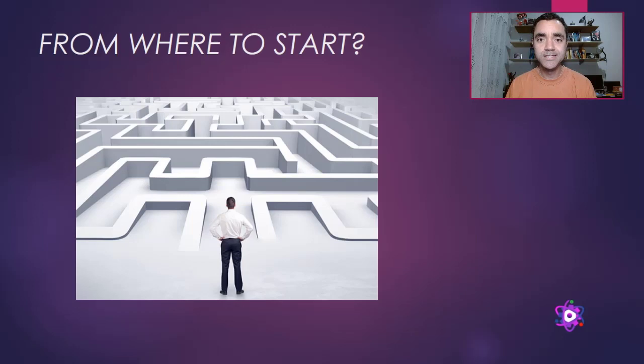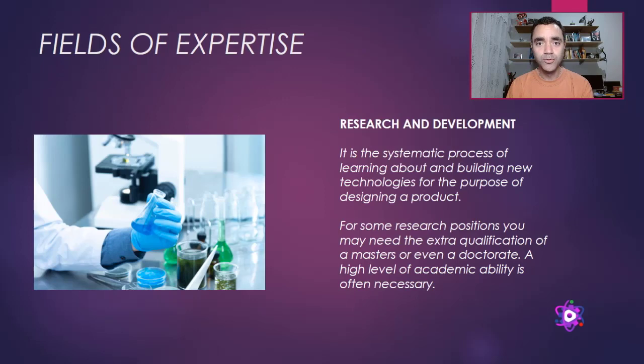To begin with, most often universities prepare us to be generalist chemical process engineers. So the first step that you must do to get a job is to find a field of expertise that fits to you. There are many fields of expertise in chemical engineering and I will show you three of them right now.